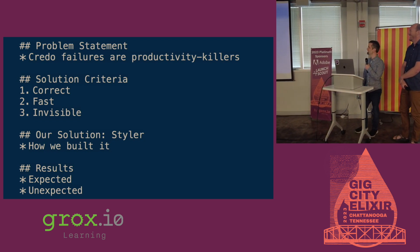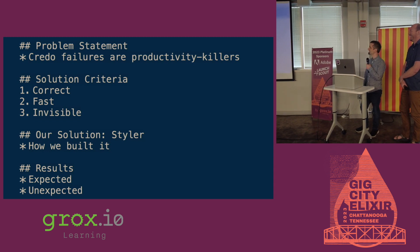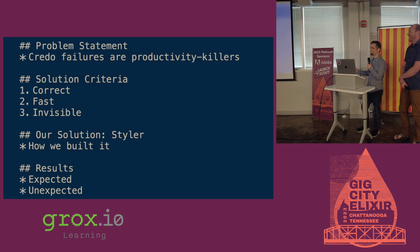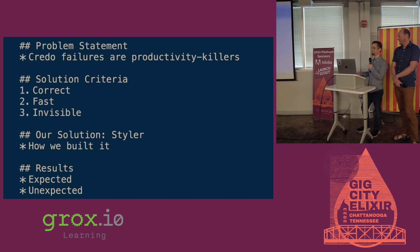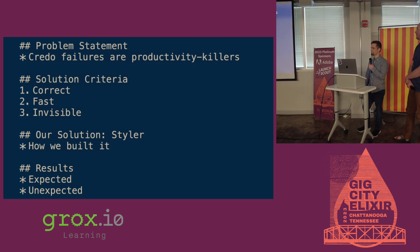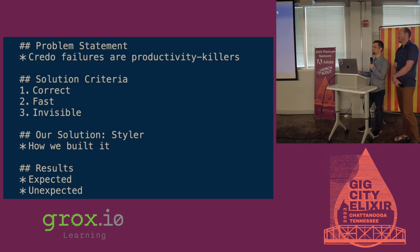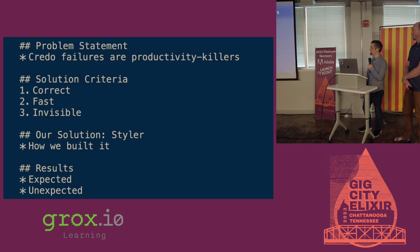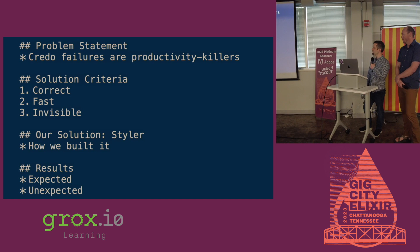The problem statement that we set out to solve here is that Credo failures just take up so much of our time because they happen at the wrong time in the workflow process — during CI, usually. So we came up with the solution criteria that we need it to be correct, fast, and invisible so that people will use it and get value out of it. The solution we came up with is something we call Styler.